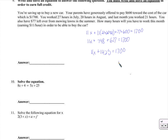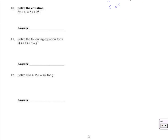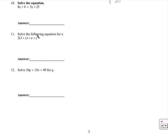Now we have a number times x, plus a number, equals a number — it's a lot like number 4. We subtract $1,425 from both sides to get 11x equals 275. We divide by 11 on both sides, and 275 divided by 11 is 25. So x equals 25 — I'll have to work 25 hours this month, which is more than the 27 I worked before — well, not a record-setting month, but 25 hours in a month for a student is kind of a lot. But it can be done.